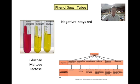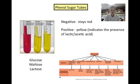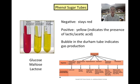A negative test result is when the phenol red sugar tube stays red, indicating that the organism is not producing acidic end products that would cause the indicator to turn yellow. A positive result is when the contents of the tube turn yellow, indicating that acidic end products are being produced, causing the pH in the tube to fall below 6.8. You may notice that the culture tubes contain small, inverted glass tubes called Durham tubes, which are present to catch any gas that may be produced during fermentation. Notice that some of the bacteria will also produce gas.